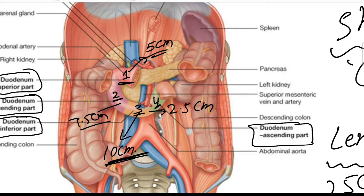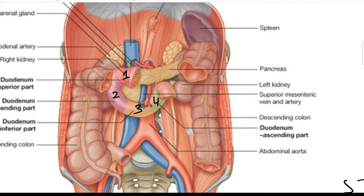The third part is the longest part of the duodenum. If you want to see the parts in inches: the fourth part is one inch long, the first part is two inches long, the second part is three inches long, and the third part is four inches in length.